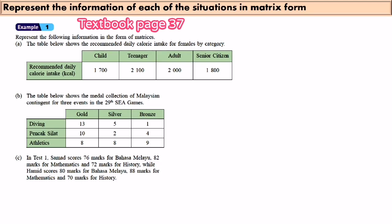Example 1: Represent the following information in the form of matrices. The table below shows the recommended daily calorie intake for females by category: Child 1,700, Teenager 2,100, Adult 2,000, Senior citizen 1,800 kilocalories. Now we write it in matrix form.